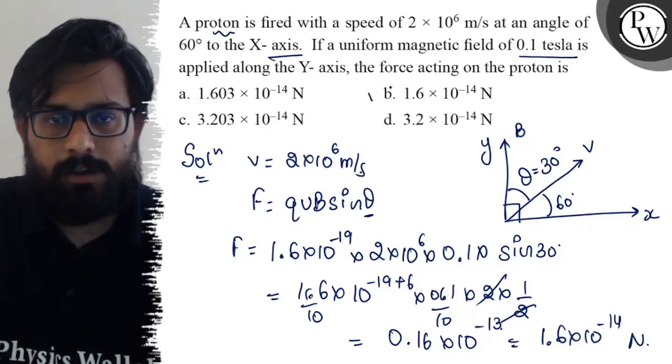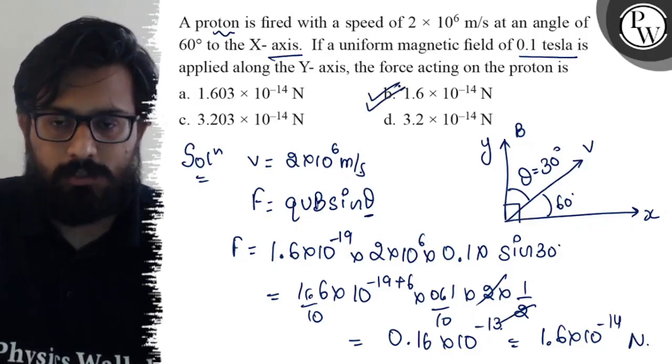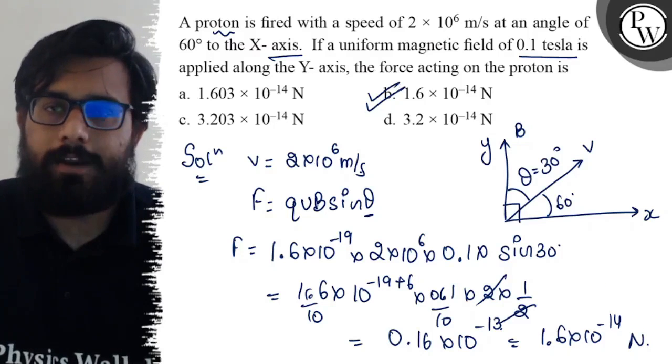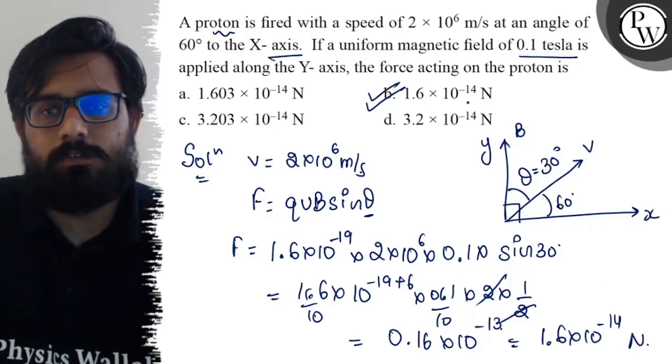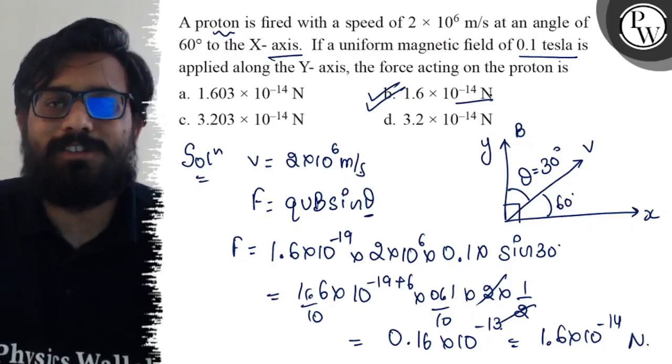Okay, 1.6 into 10 to the power minus 14 newton is one option. Yes, it is in our B option. So, B option is absolutely correct. So, I hope you got the concept of this question. All the very best. Thank you.